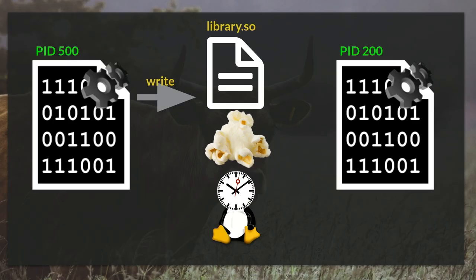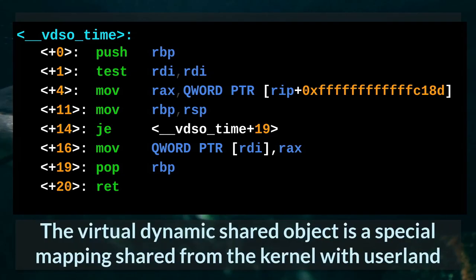Dirty COW is a vulnerability affecting the kernel's copy-on-write mechanism. The exploitation allowed an unprivileged task to write to a read-only memory mapping, including shared file memory mappings, resulting in modified data being written back to the mapped file. This could overwrite library code on disk which would later be executed by privileged programs, enabling local privilege escalation. But if containers have isolated file systems, who cares if a container task can corrupt shared objects in the container? Introducing the virtual dynamic shared object (VDSO) — a special mapping shared from the kernel with user land to provide quick access to frequently used functions without the overhead of a syscall.